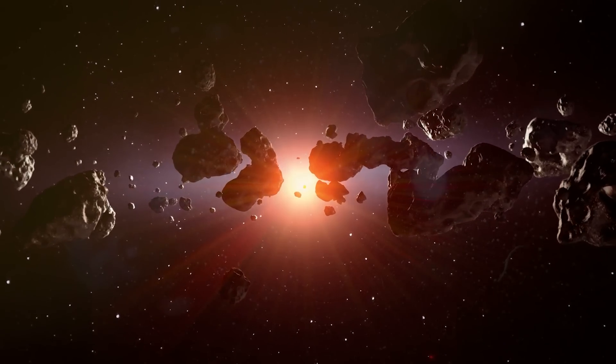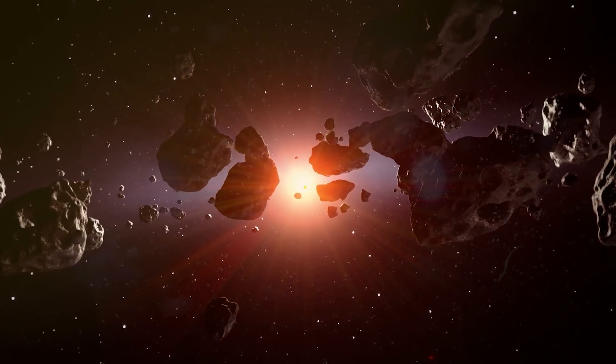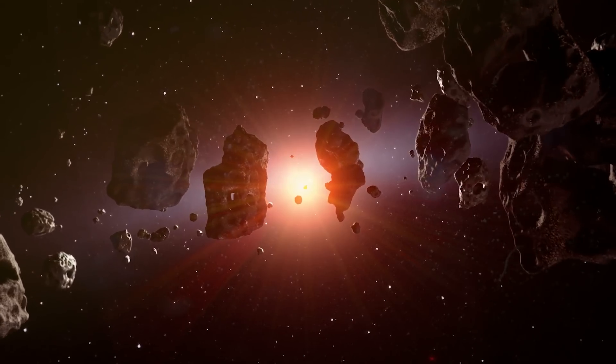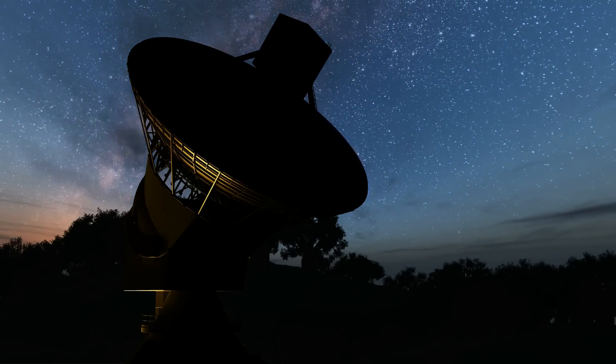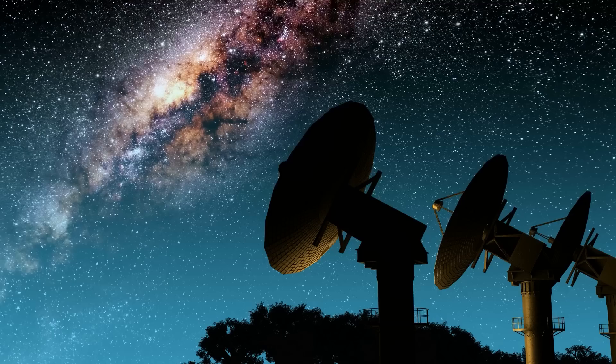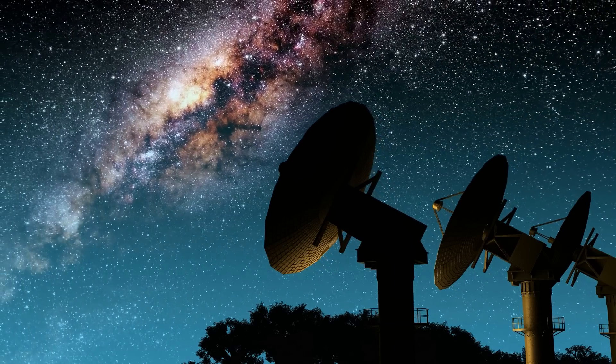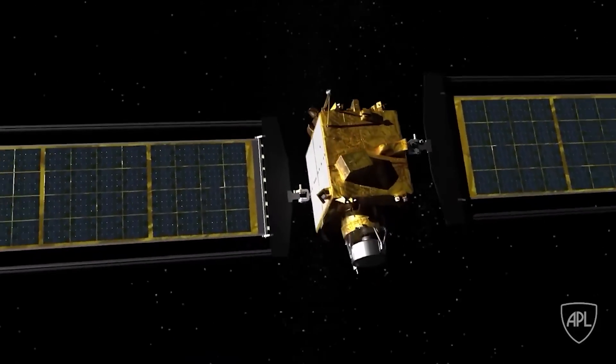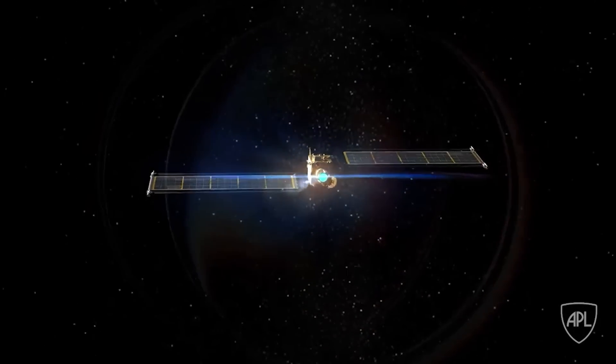NASA doesn't know of any asteroids of this size or larger that have any chance of hitting us for at least the next 100 years, but they estimate that we've only found about 40% of near-Earth objects that fall into this category. So, we need to be ready for when we do. And, thanks to DART, we know that we can easily send a small mass impactor to do the job.